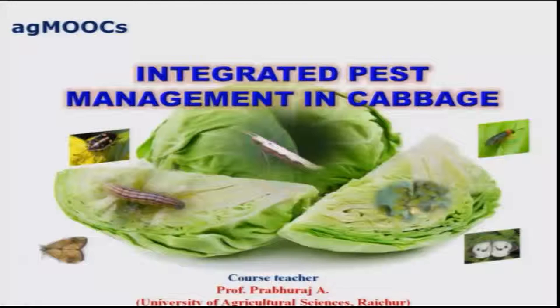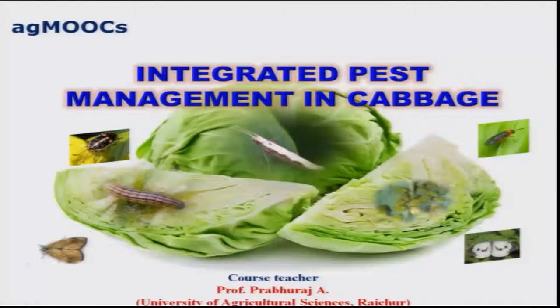Cabbage is one of the important vegetable crops grown across the country, as well as cauliflower, which belongs to the same family. The pests occurring on these vegetables can be broadly categorized into insect pests of national significance and insect pests of regional significance.